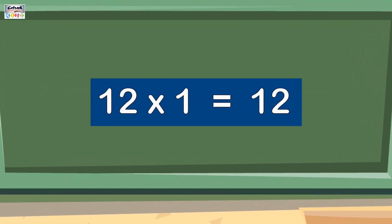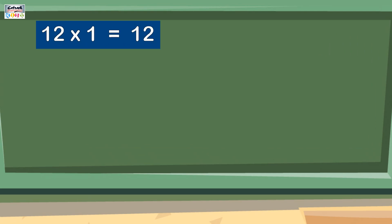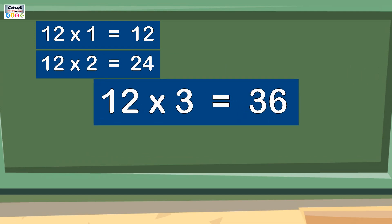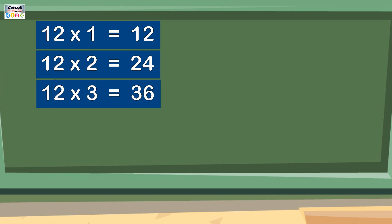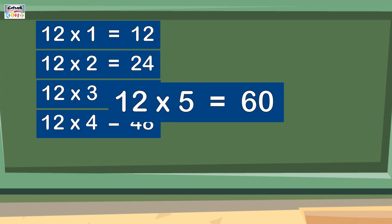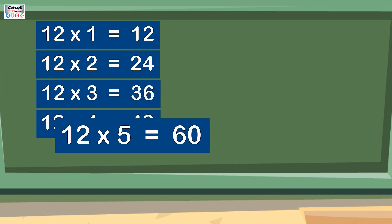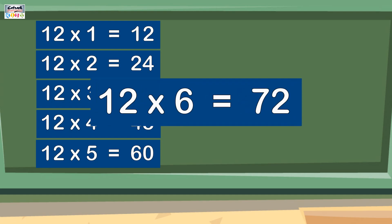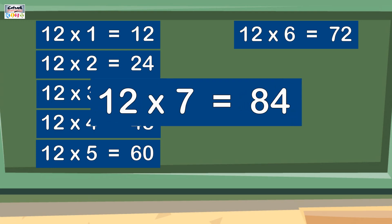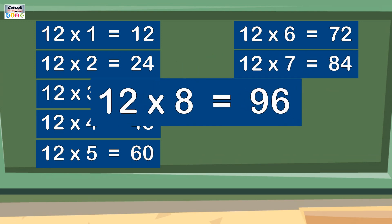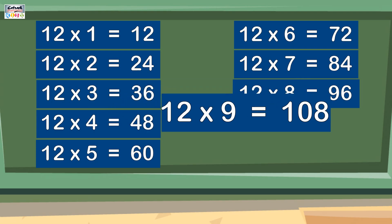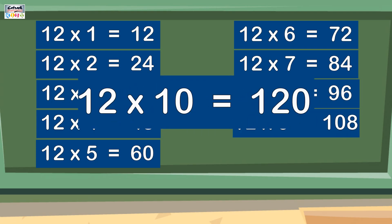12 1s are 12. 12 2s are 24. 12 3s are 36. 12 4s are 48. 12 5s are 60. 12 6s are 72. 12 7s are 84. 12 8s are 96. 12 9s are 108. 12 10s are 120.